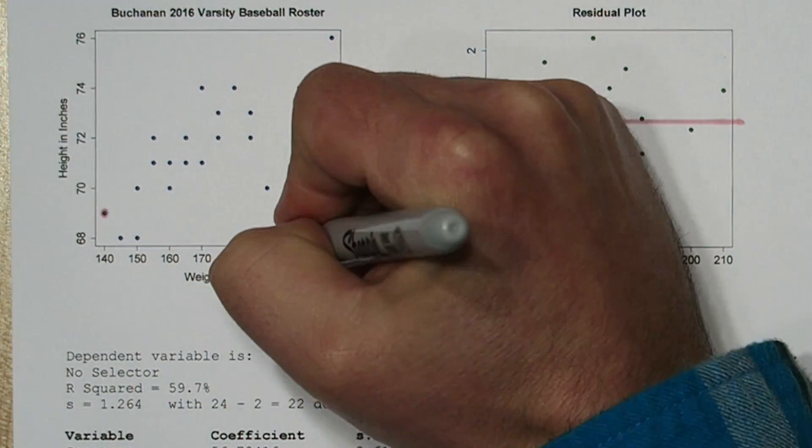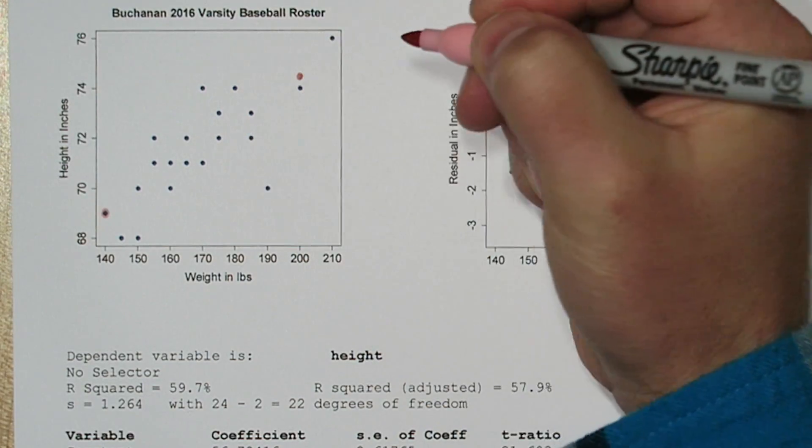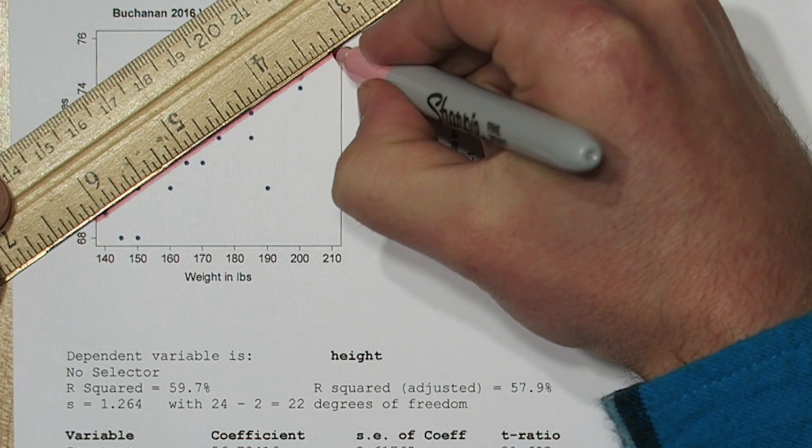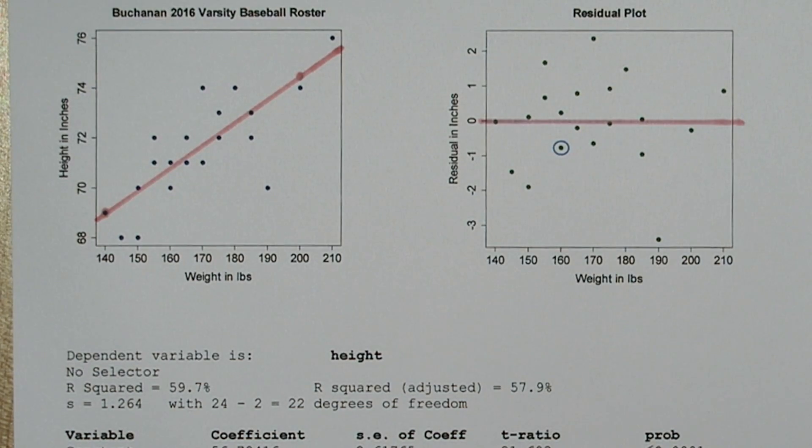So there's our first point. We'll graph our other point at 200, 74.3, and connect them. Alright, there's our least squares regression line, graphed on our original scatterplot.